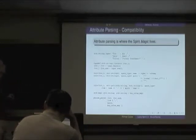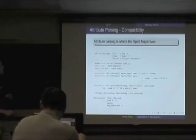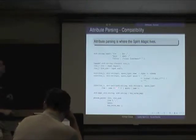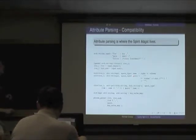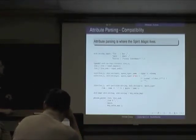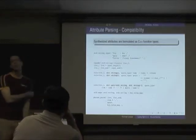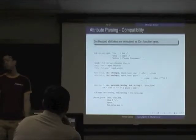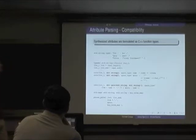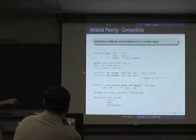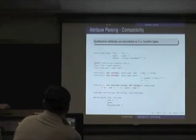We're getting close to what we want. Remember I wanted a map — parse into a map of string to string. I've made a modification: comma-separated items. Rules expose attributes, just like primitive parsers. We define this as a C function type where the return value is the synthesized part: rule 'name' synthesizes std::string, 'quote' synthesizes std::string, and 'item' synthesizes std::pair<string, string>.